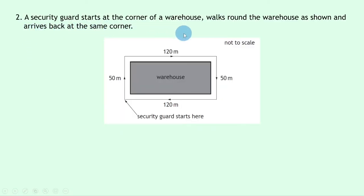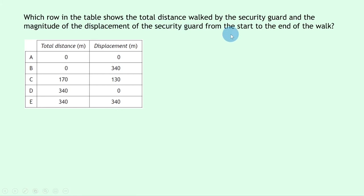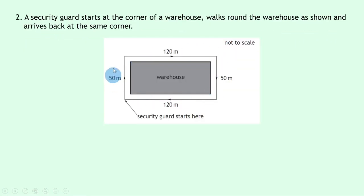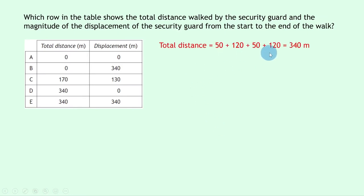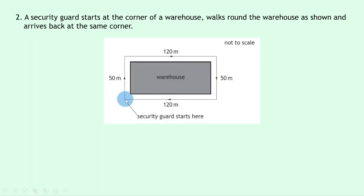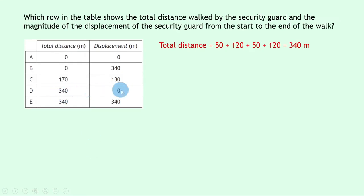Question 2 says a security guard starts at the corner of a warehouse, walks around it and arrives back at the same corner — 50 metres north, 120 metres east, 50 metres south and 120 metres west. To find total distance: 50 + 120 + 50 + 120 = 340 metres. The magnitude of displacement is zero because the guard ends up back where they started, so the answer is D.